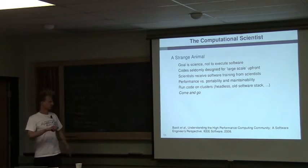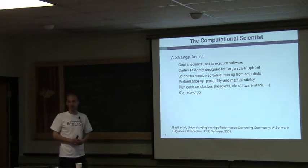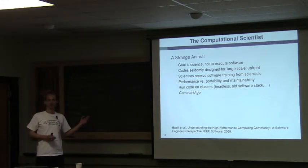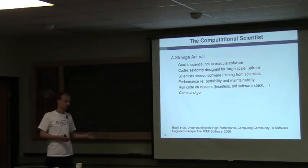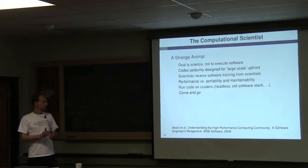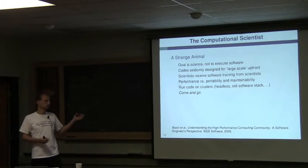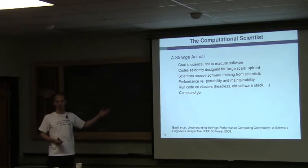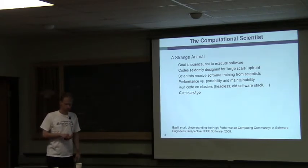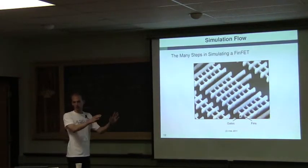There is a certain come-and-go mentality in the computational science community. A large amount of code is written by PhD students, who hardly stay for more than five years, probably shorter. There is a natural brain drain which, considering the complexity of codes and that teams are usually small scale, hits fairly hard.